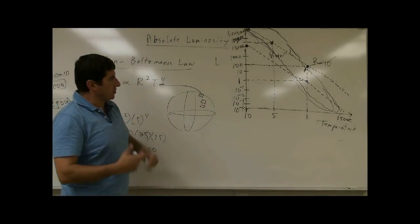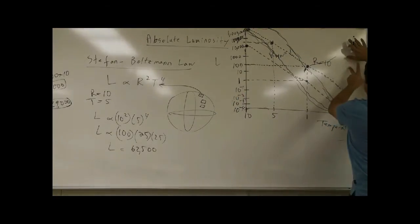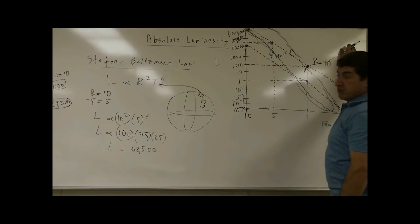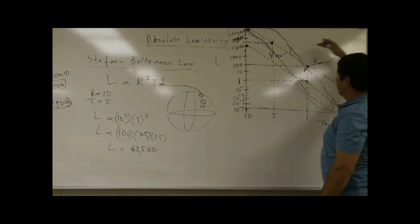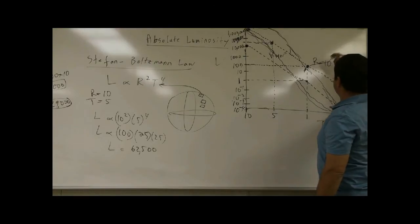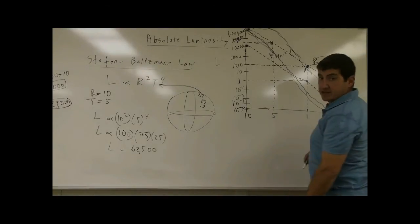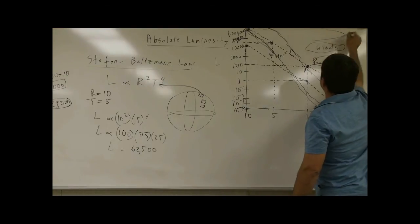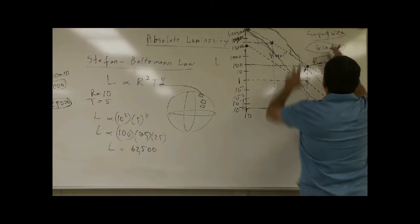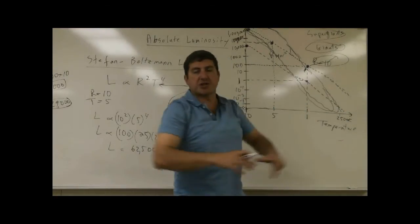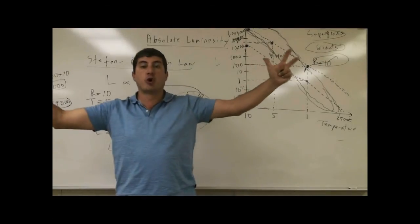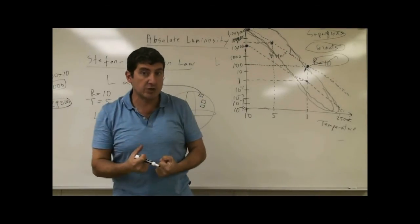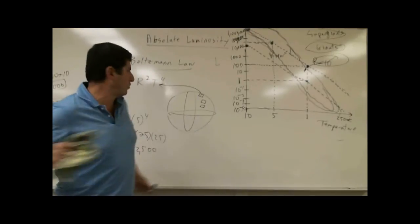Looking at other regions of the HR diagram, that area is quite populated. There are sub-giants down here, giants over here, and supergiants further along. Those are stars that are dying and have grown — they've cooled down but are much bigger.